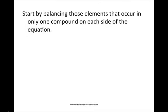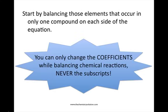We'll start out balancing chemical equations by balancing the elements that occur in only one compound on each side of the equation. When balancing chemical equations, you can only change the coefficients in front of the reactants or products. You can never change the subscript — if you change the subscript, you're actually changing the identity of the compound.